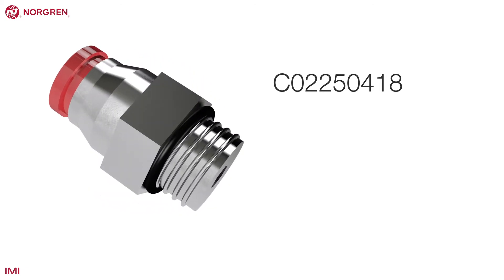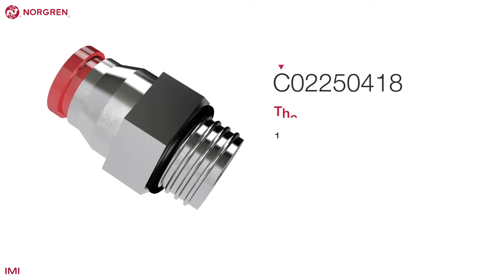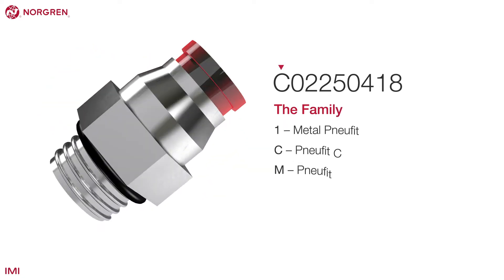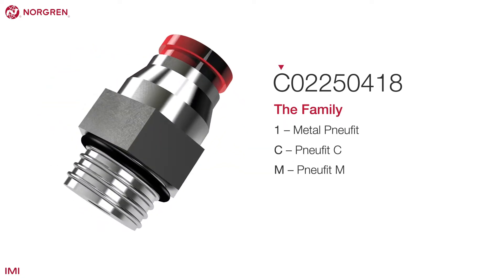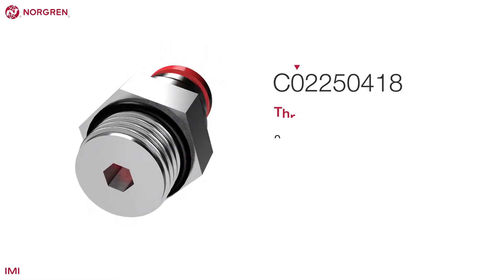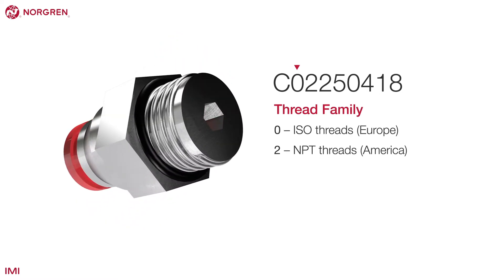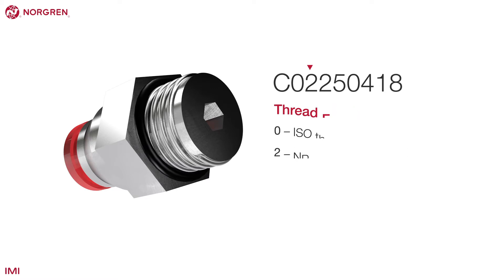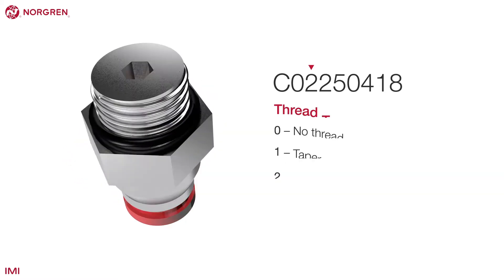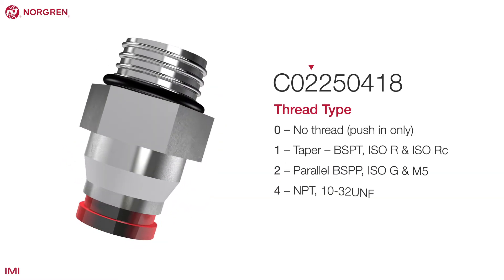Let's take a typical number. Digit 1 tells us the family — in this case Newfit C, a composite fitting. Digit 2 tells us the thread family; here it's ISO threads. Digit 3 tells us the thread type, in this case parallel.